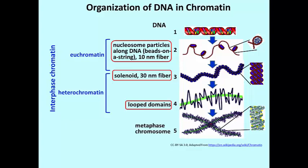Now some of these transitions — from nucleosome or 10 nanometer filaments to 30 nanometer fibers and to looped domains — are the result of the addition, or accretion, of proteins to these structures. We refer to the histone proteins as the basis for nucleosome structure, and other proteins that associate with DNA to form chromatin and ultimately chromosomes as non-histone proteins.